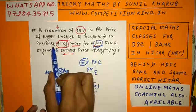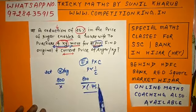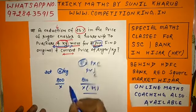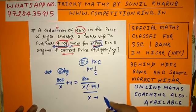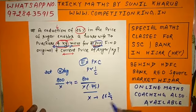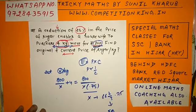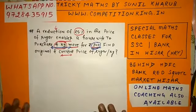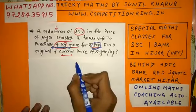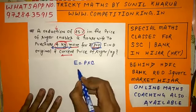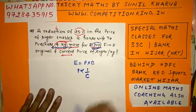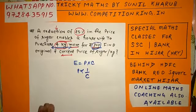The problem states she purchased 4 kg more after the price reduction. Now we will go by the trick. In all such questions, expenditure is the same, and expenditure is nothing but price multiplied by consumption.